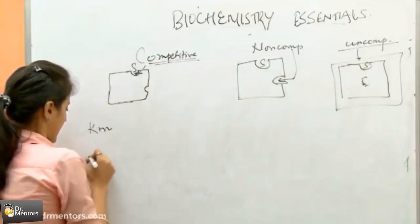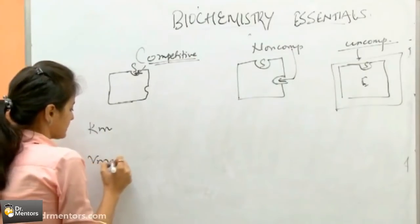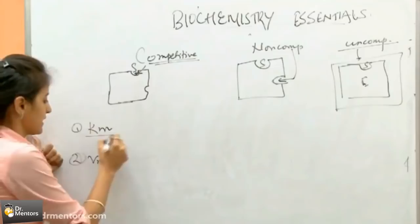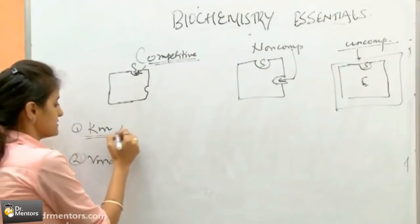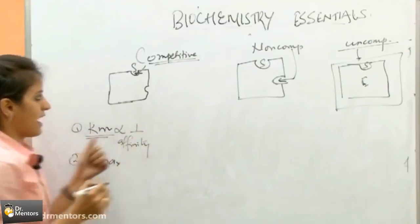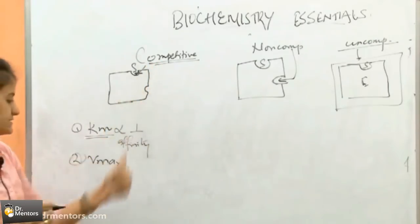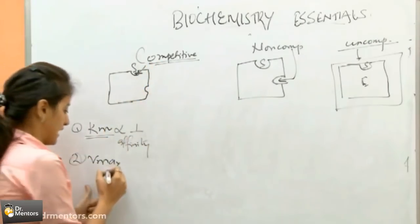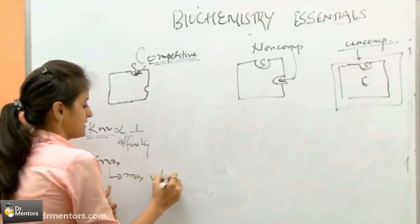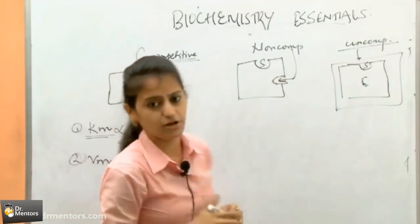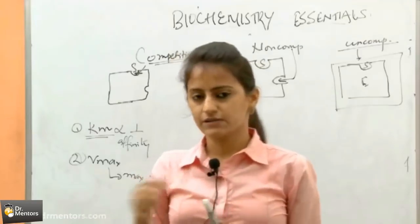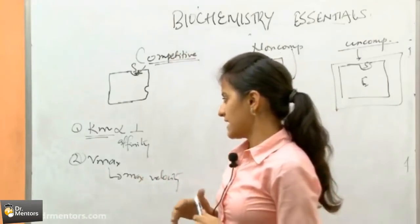Now coming to Km and Vmax — what do they indicate? Km is inversely proportional to the affinity between substrate and enzyme. And Vmax, as the name says, is the maximum velocity of the reaction which can be reached after the substrate binds to the enzyme.